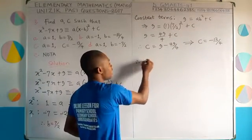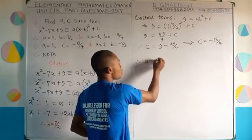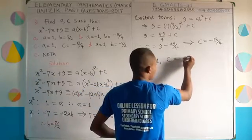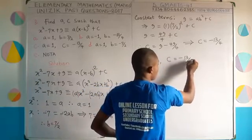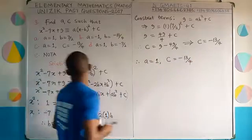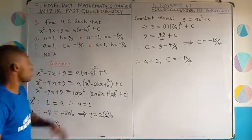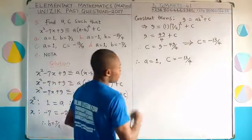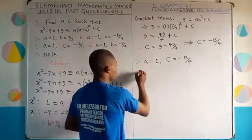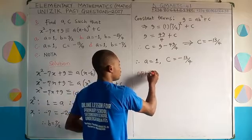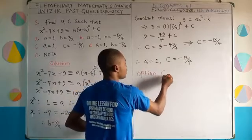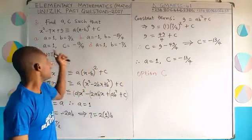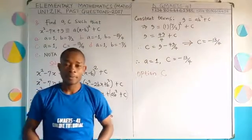Therefore A equals 1 and C equals minus 13 over 4. The correct option is option C. Go over to option C and shade it correctly.